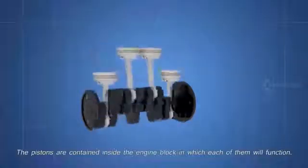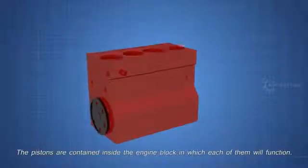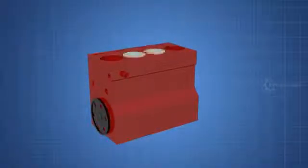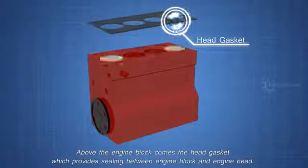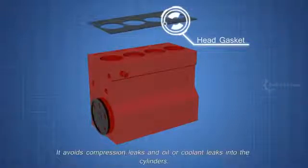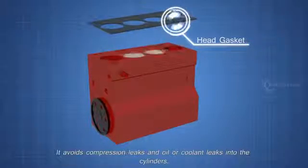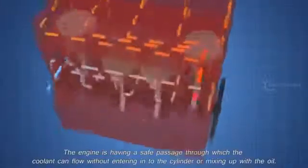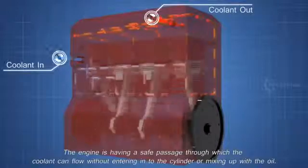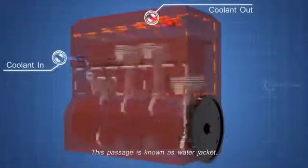These are the main parts involved in an engine cooling system. Now, let's see how these parts work together. The pistons are contained inside the engine block, in which each of them will function. Above the engine block comes the head gasket which provides sealing between engine block and engine head. It avoids compression leaks and oil or coolant leaks into the cylinders. Above that comes the engine head. The engine is having a safe passage through which the coolant can flow without entering into the cylinder or mixing up with the oil. This passage is known as water jacket.